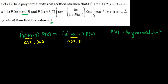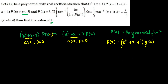Since both quadratics have no real factors, they will not cancel each other out. Therefore, I can assume P(x) = (x²+x+1)·g(x), where g(x) is another polynomial function. This form is valid precisely because neither quadratic has real factors, so no cancellation occurs.